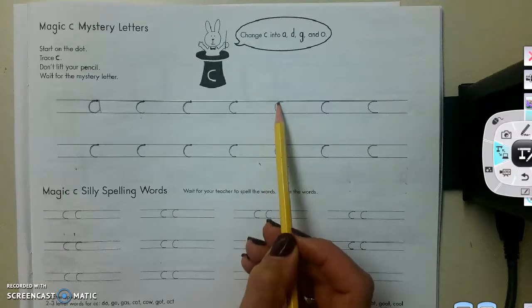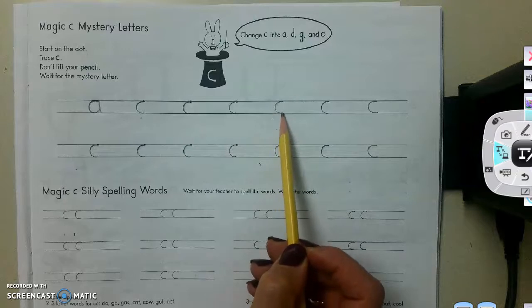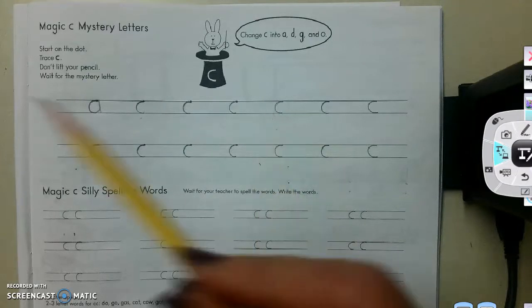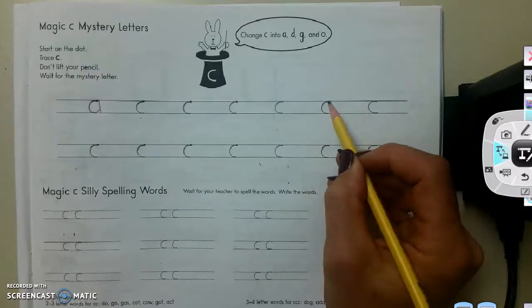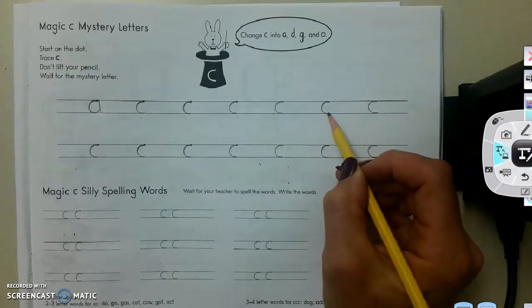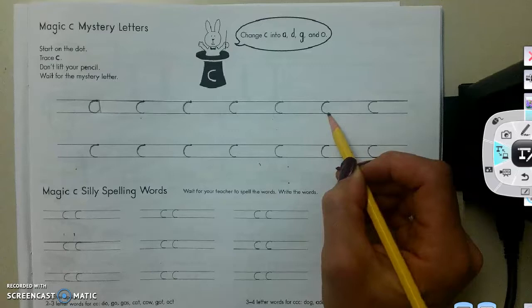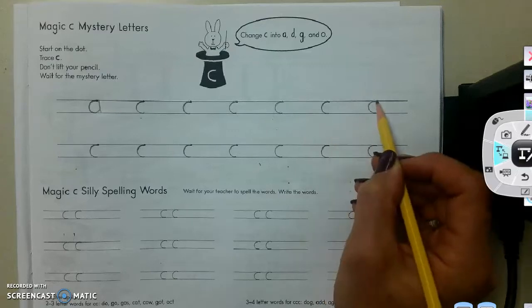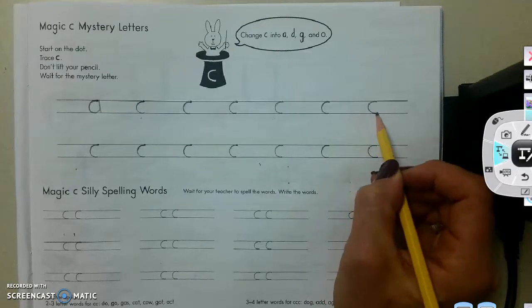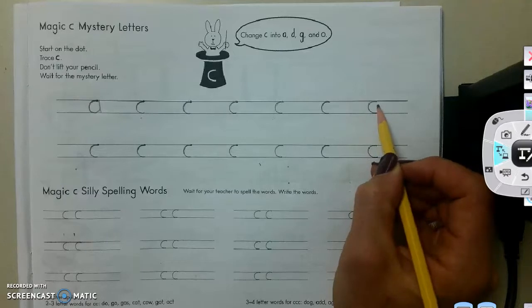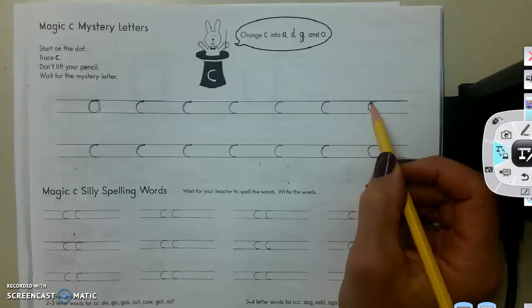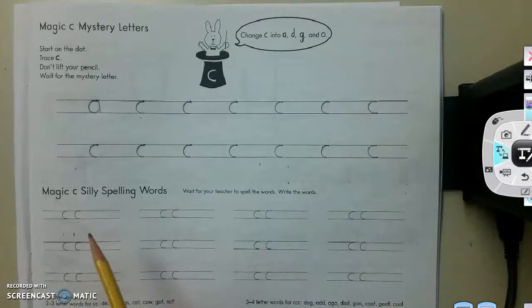Magic C. O. Make sure you're doing it with me. Magic C. G. Magic C. A. Okay. Alright.